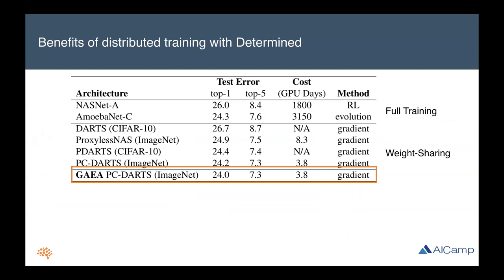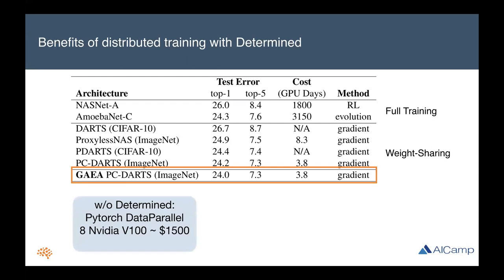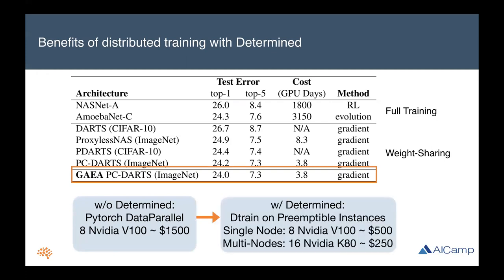Another benefit of distributed training with Determined is support for cheaper preemptible spot instances on AWS and GCloud. Outside of Determined, we trained this GAIA PC-DARTS model from scratch using eight NVIDIA V100s for around $1,500. But with Determined, we're able to exploit preemptible instances to reduce that cost to $500. And with multi-node Determined training, we can use 16 cheaper NVIDIA K80s to reach the same performance for an even lower cost of $250. Distributed training is really helpful for NAS.